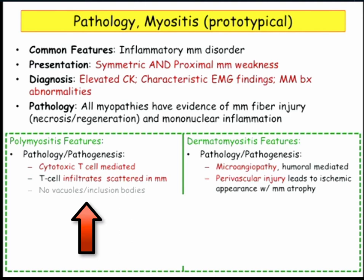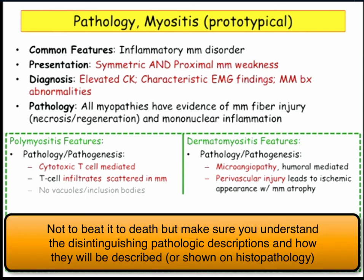Polymyositis is cytotoxic T cell mediated — a T cell infiltrate scattered within the muscle. When they say no vacuoles or inclusion bodies, they're distinguishing it from inclusion body myositis. Dermatomyositis, by contrast, involves microangiopathy: antibodies directed at the blood vessel lining, perivascular damage leading to ischemic injury. Completely different pathology.